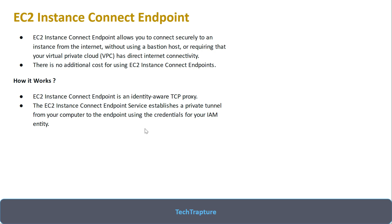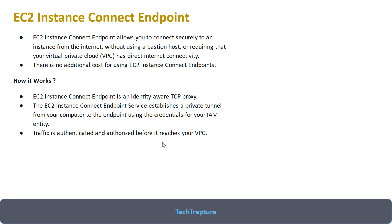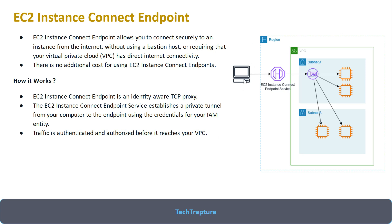Whenever you want to connect to your EC2 instance without a public IP, you can use this identity-aware TCP proxy. What it does is create a private tunnel between your remote system — say, your laptop — and your VPC. The traffic is authenticated and authorized between your system and the VPC. As shown in the diagram, you are at a remote location connecting to an instance in a private subnet, and it creates one private tunnel using this endpoint, giving you access to your EC2 within the private subnet.